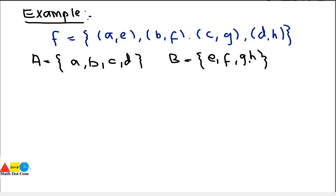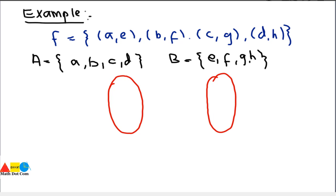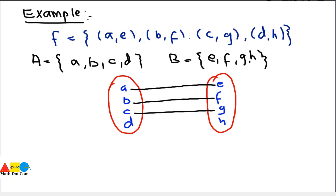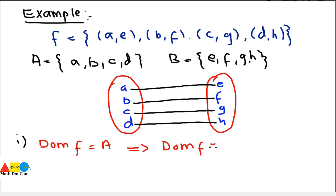We have to check the two conditions, so we will draw it. This is set A and this is set B. The elements are a, b, c, d and e, f, g, h. We map them: a to e, b to f, c to g, and d to h. Now checking condition one: the domain of f must equal A. The domain is the first element of the ordered pairs, so domain of f = {a, b, c, d}.